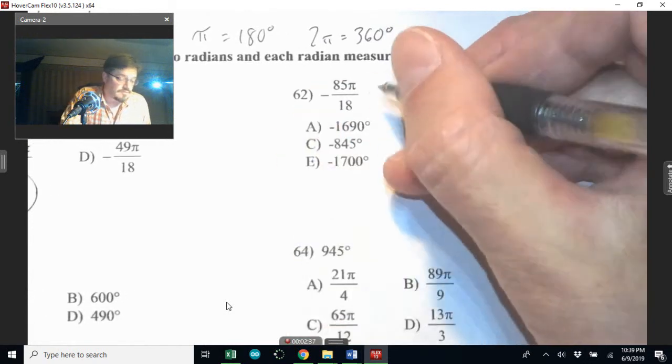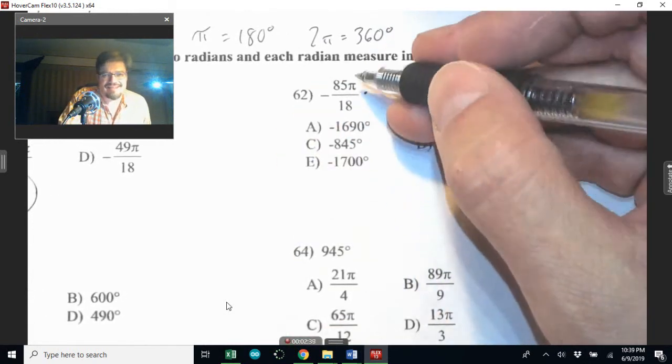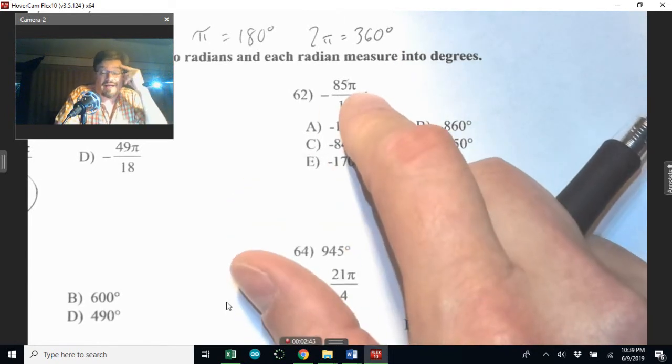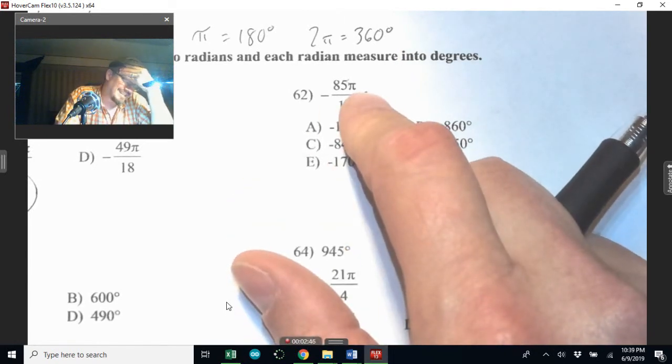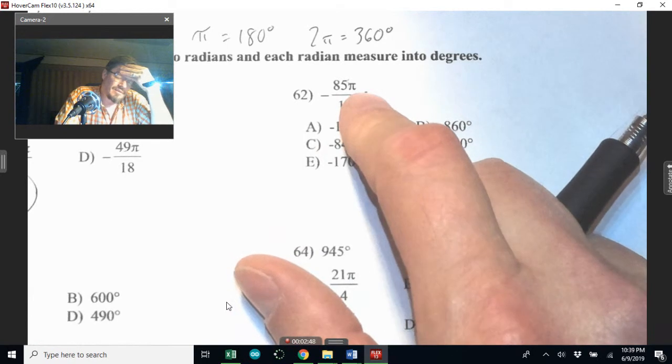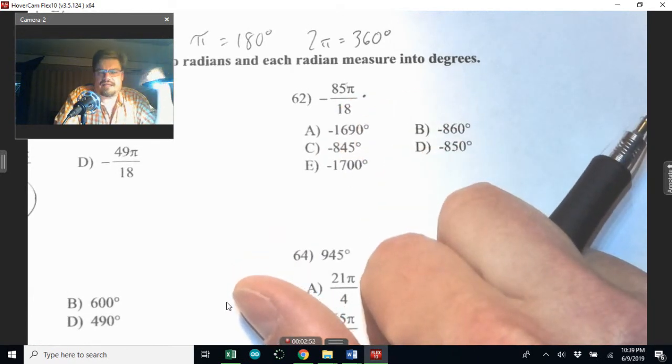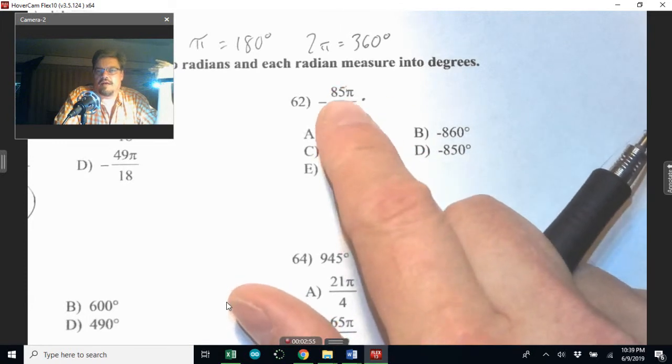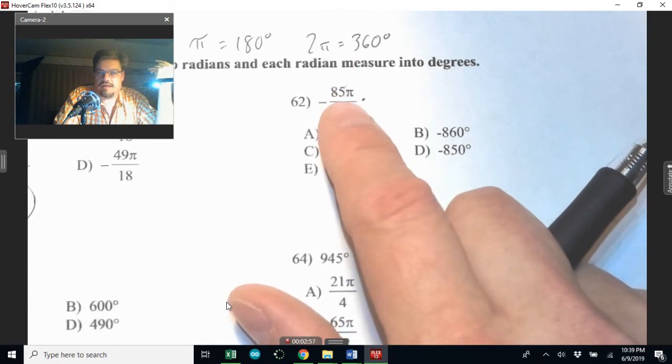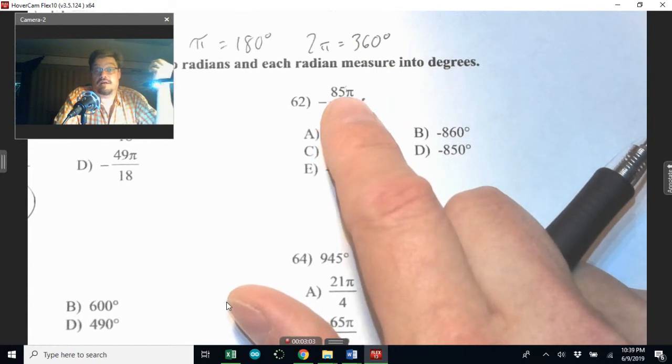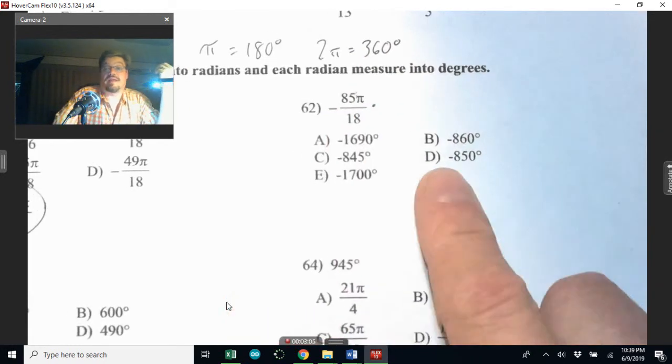Now, pi over 18, this family right here. If you think about it, pi divided by 18, so that's 180 degrees divided by 18, that's 10 degrees. So that means I have 85 times 10 degrees, which is 850, and it just happens to be negative. So I know my answer is D.